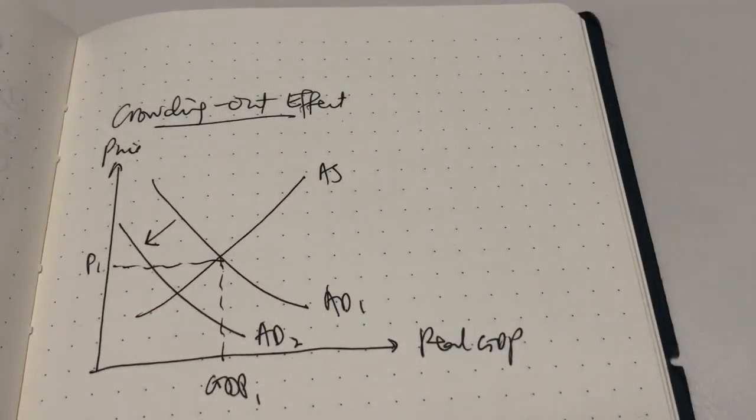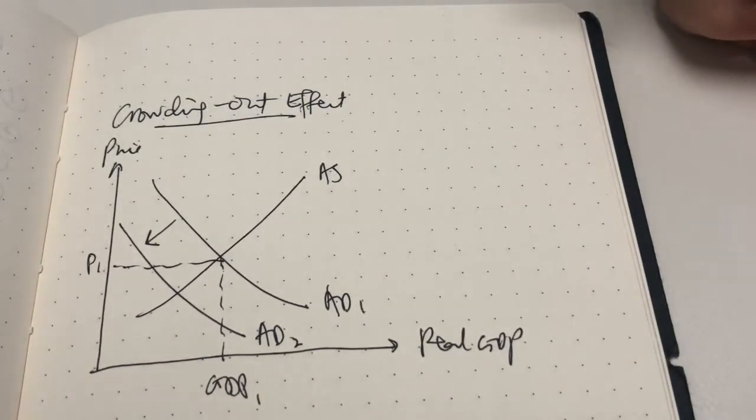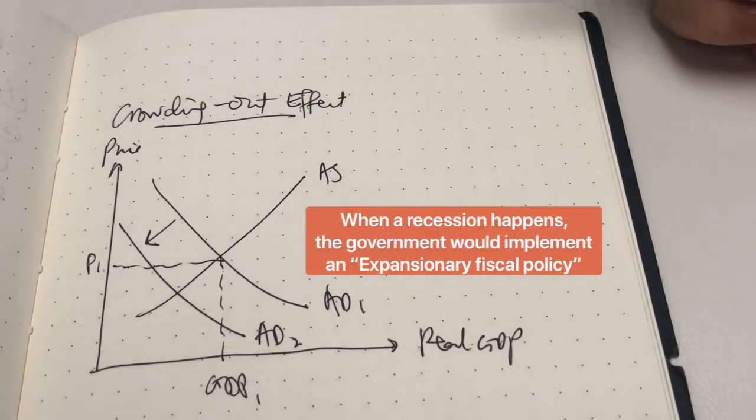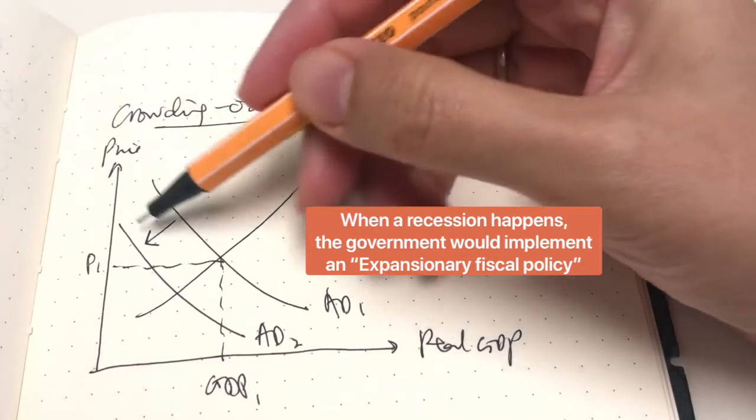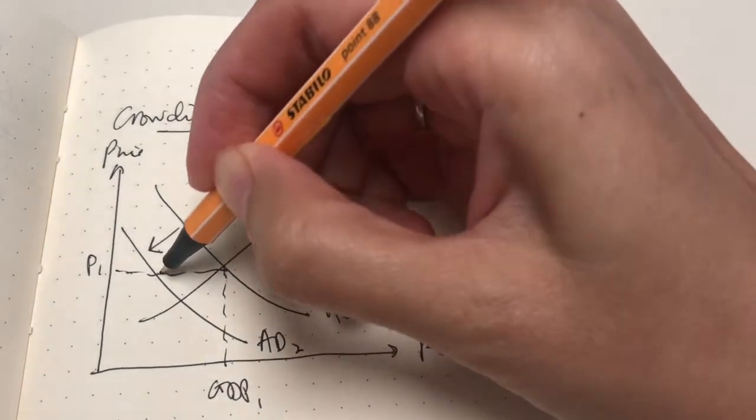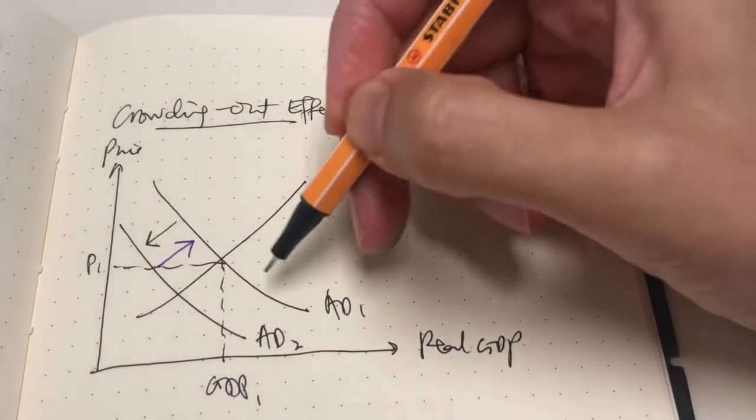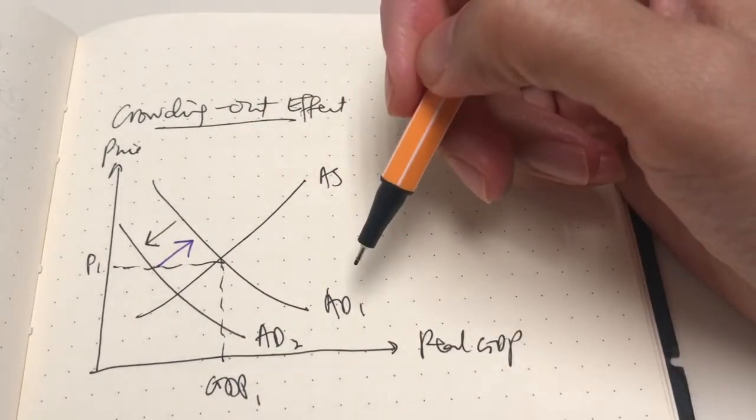Naturally, with a recession, the government would react and adopt an expansionary fiscal policy, correct? What that means is the government would increase the aggregate demand curve back to the original position. Remember, AD here...